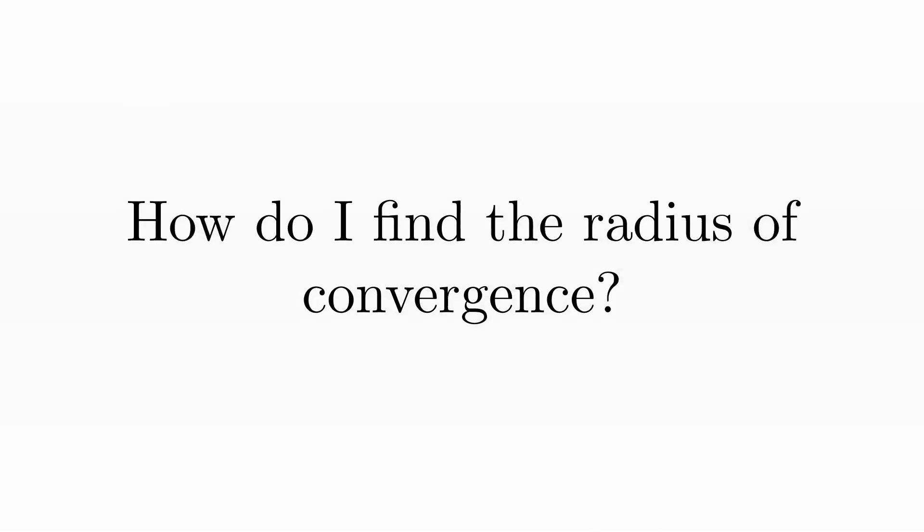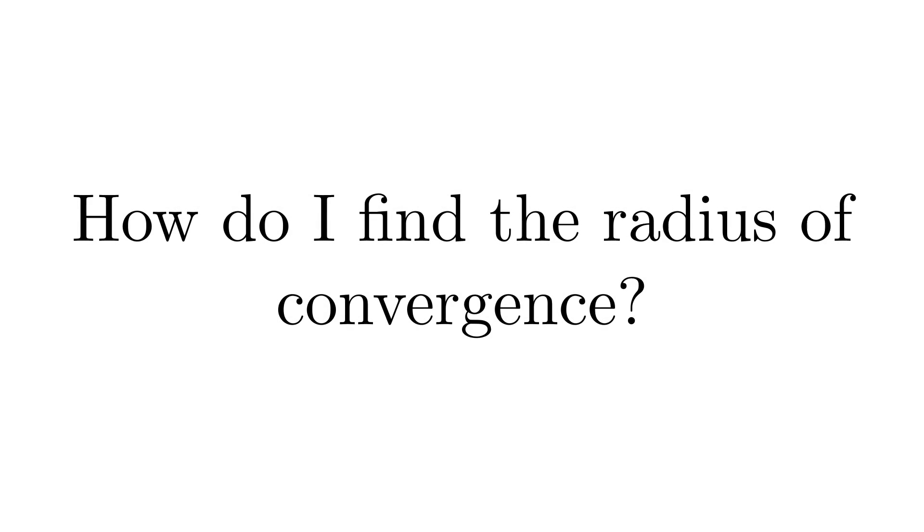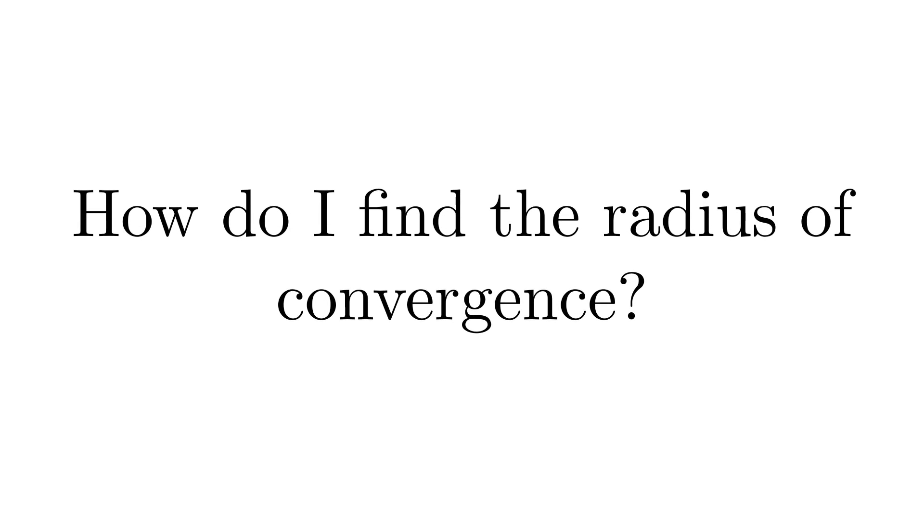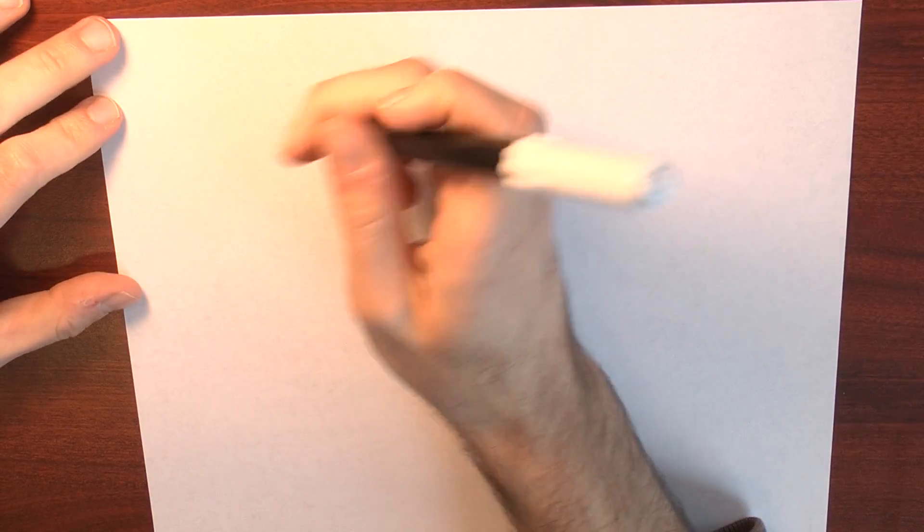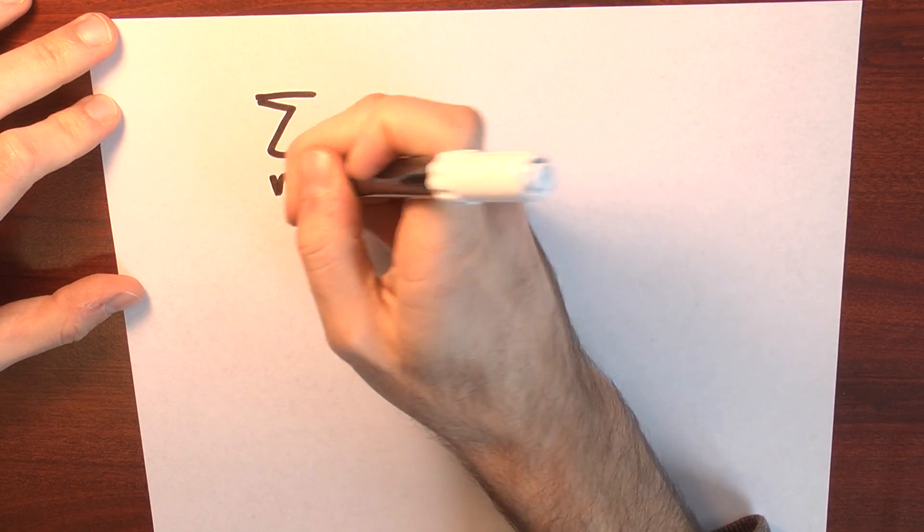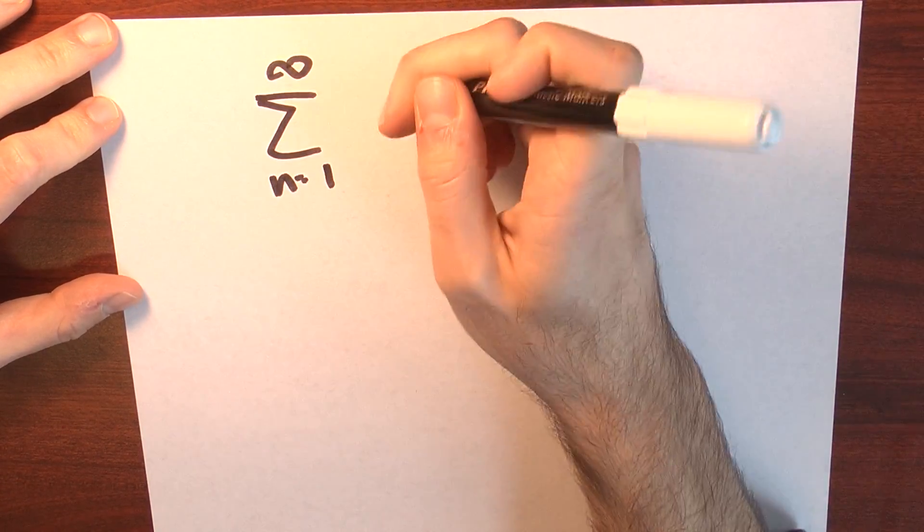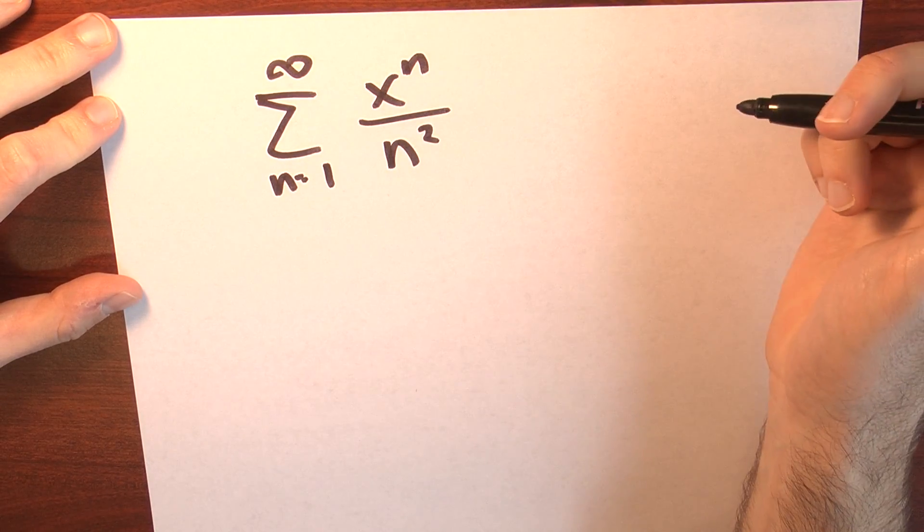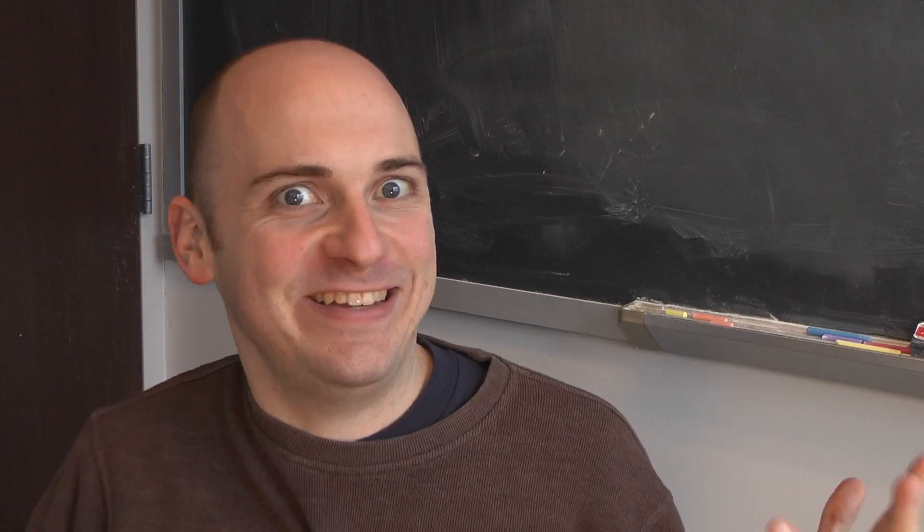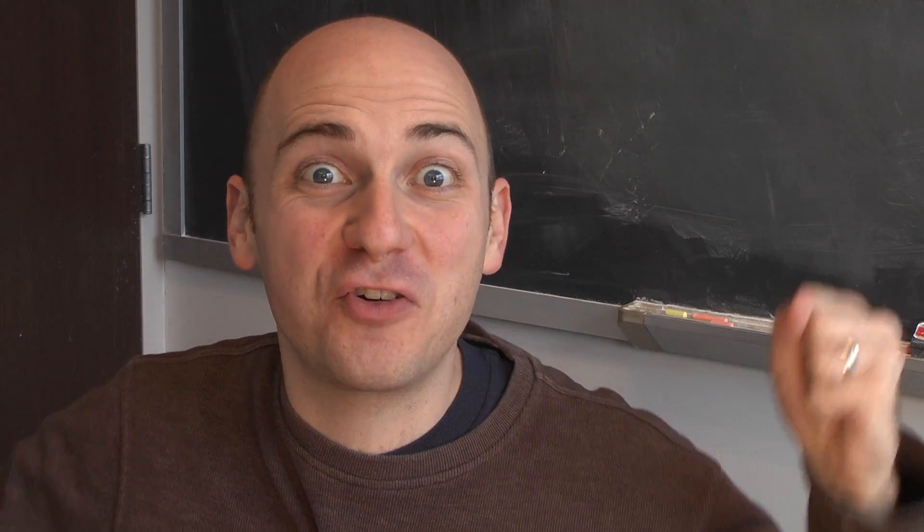Finding the radius. Let's suppose that I've been given a power series. Perhaps it's the power series, the sum n goes from 1 to infinity of x to the n divided by n squared. How do I find the radius of convergence?